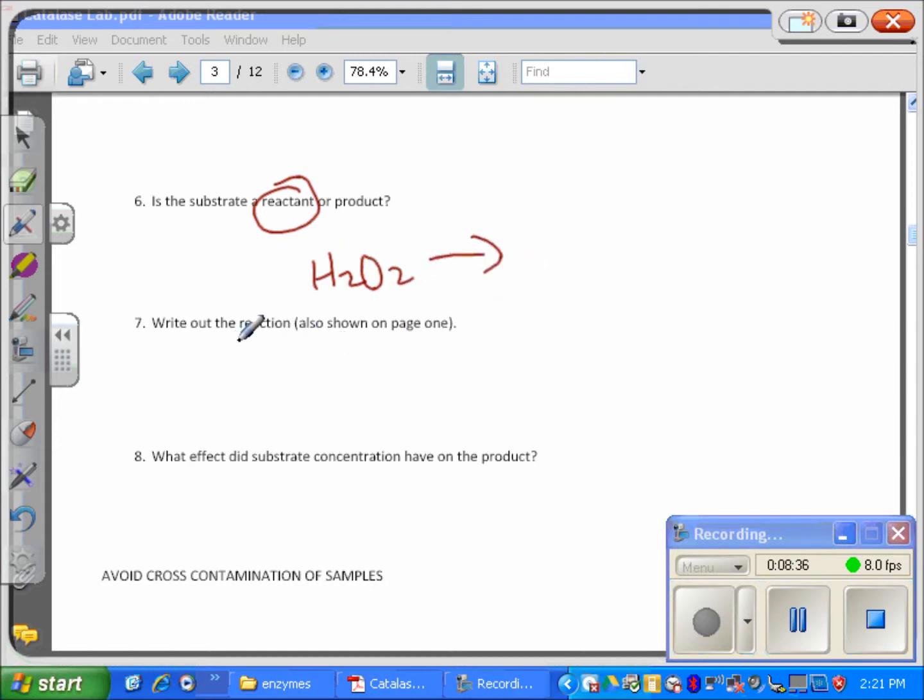Is the substrate a reactant or a product? It's a reactant, so H2O2 is the substrate or the reactant and it produces the product which is going to be water and oxygen. Write out the reaction as shown on page one. That's just 2H2O2 gives you water and oxygen. Make sure you have enough of all of your numbers there, and I would write catalase on top so you know that this reaction required an enzyme to go at any appreciable rate.